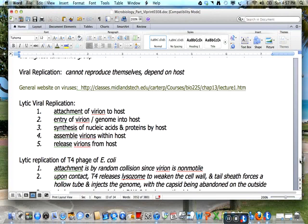The tail sheath fibers force in a hollow tube and it injects the genome. The capsid is abandoned on the outside.